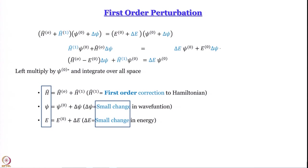We know that H 0th minus E 0th operating on psi 0th equals zero. So if we can somehow replace delta psi with psi 0th inside the integral, then we know how to proceed. That is essentially what we are trying to do — and to accomplish that, we left-multiply by psi 0th star and integrate over all space.